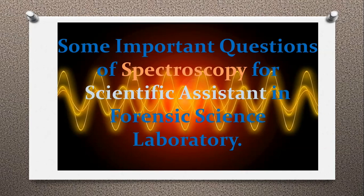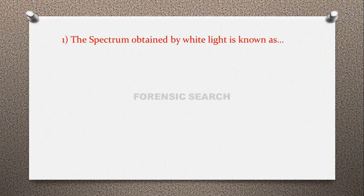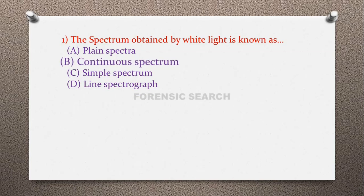Let's start with question number 1: The spectrum obtained by white light is known as — option A: plain spectra, option B: continuous spectrum, option C: simple spectrum, option D: line spectrograph. The correct answer is option B — the spectrum obtained by white light is known as continuous spectrum.